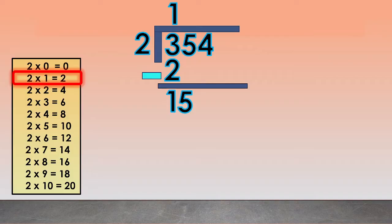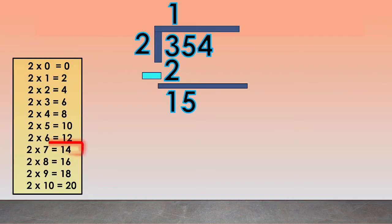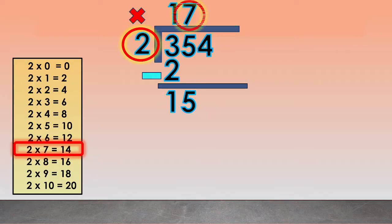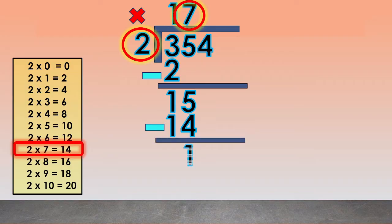Now find how many times 2 goes into 15. We will use the 2 multiplication table. We will use 2 times 7 equals 14. We write the 7 above the 5. Then we multiply 2 times 7 equals 14. Now we subtract 15 minus 14 equals 1.